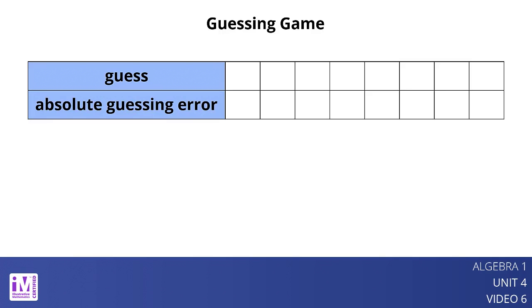Suppose 8 people made these guesses for the number of pretzels in a jar: 14, 15, 19, 21, 23, 24, 26, and 28. If the actual number of pretzels is 22, the absolute guessing error of each number is as shown.